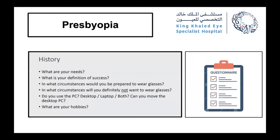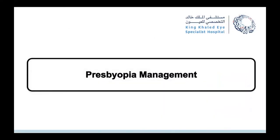When approaching patients with presbyopia, we start with a detailed history — taking their needs, defining success with them, discussing when they are prepared to use glasses and when not. We ask about PC use, hobbies, and lifestyle. For a serious refractive surgeon, it's preferable to put this objectively in writing with the patient so that the discussion becomes constructive about the solution.